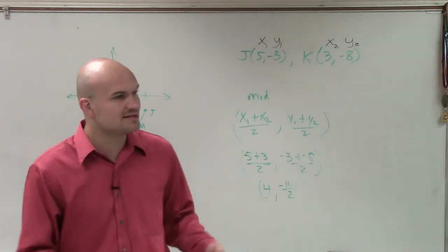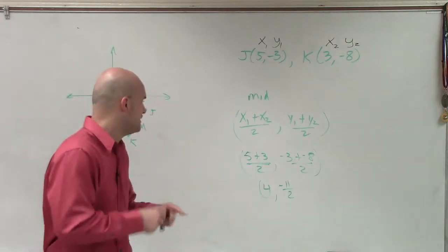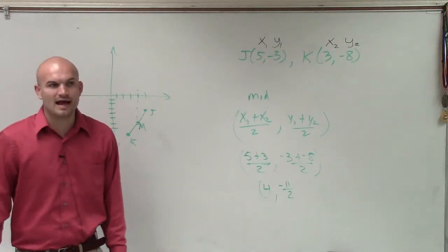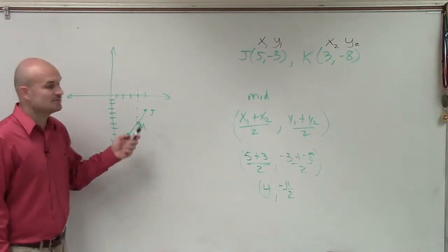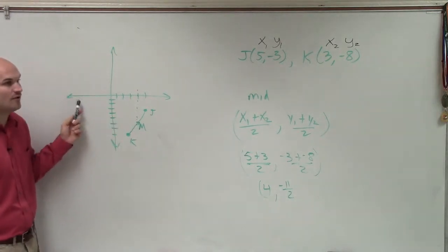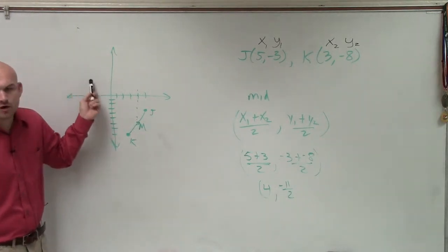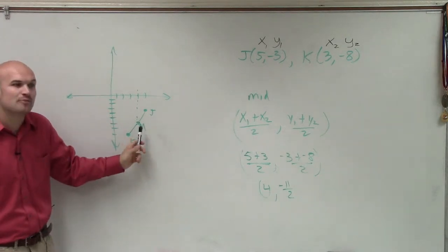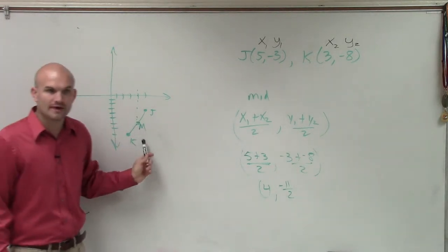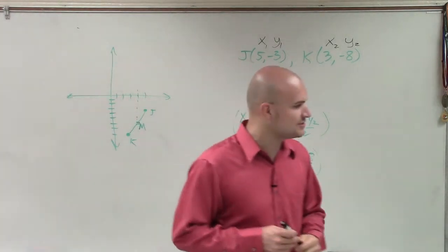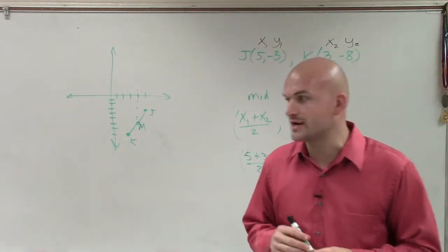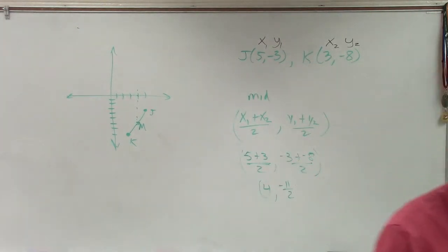And you guys can do that, because what if your answer was wrong? What if you had negative 4 and positive 11 halves? Well, then you'd know you did something wrong, because you'd go in over negative 4 and then up 5 halves. You'd be like, oh, I made something wrong, because I know my midpoint's supposed to be down here. OK? So that's why I did the graphing, so you guys can kind of visualize and make sure that you're doing your answer correct. All right?